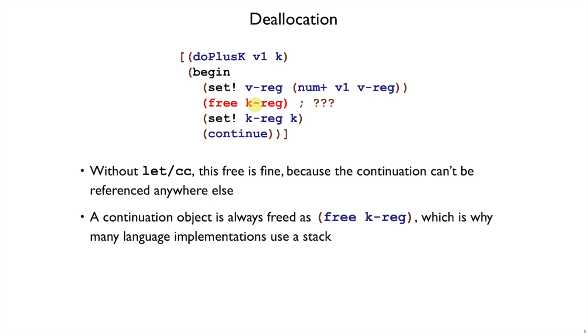In fact, most languages don't provide let cc and they can implement continuations as a stack. The allocation of a continuation frame, like a do plus k frame, corresponds to a push onto the stack. And the free right here, when we resume a continuation, the rest of the continuation, that corresponds to a pop on the control stack.